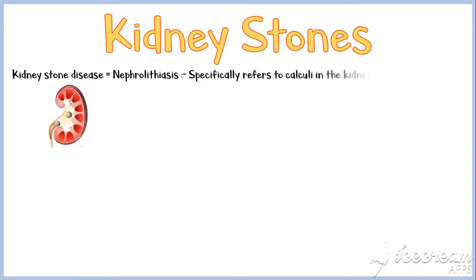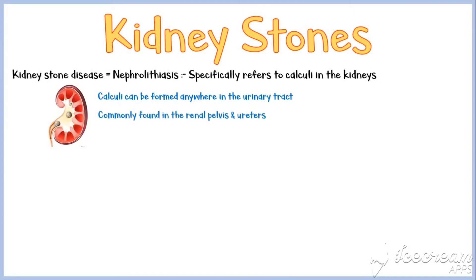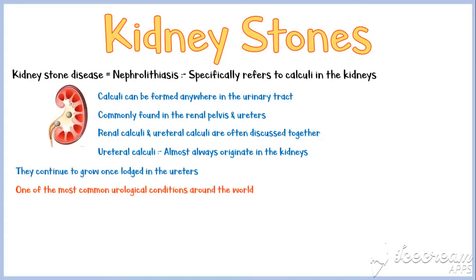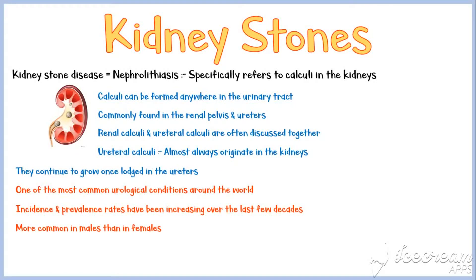Kidney stone disease, also known as nephrolithiasis, specifically refers to calculi in the kidneys. Calculi can be formed anywhere in the urinary tract; however, they are commonly found in the renal pelvis and ureters. Renal calculi and ureteral calculi are often discussed together, and ureteral calculi almost always originate in the kidneys, although they continue to grow once lodged in the ureters. Kidney stone disease is one of the most common urological conditions around the world. Its incidence and prevalence rates have been increasing over the last few decades. It is more common in males than in females, and the usual age at presentation is between 20 to 40 years.